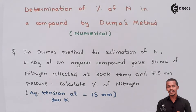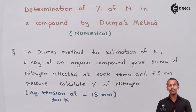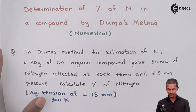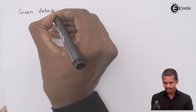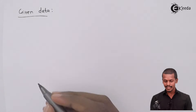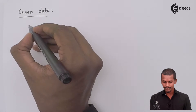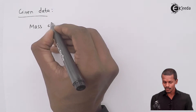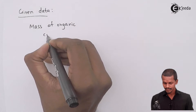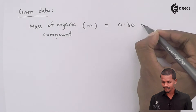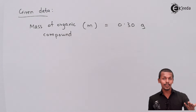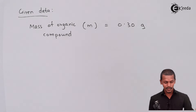Let us write the data given in the question so it will be easy to represent how the answer is obtained. The first given value is the mass of the organic compound, M = 0.30 gram. The volume of nitrogen collected in the nitrometer, V1, has been found to be 50 ml.